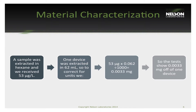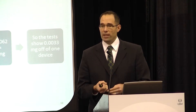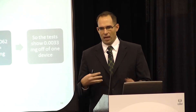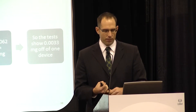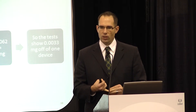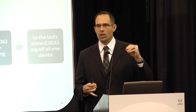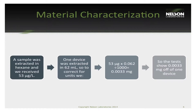Here's a real-life example of how we evaluate compounds coming off a device. The first device was extracted in hexane, a very harsh solvent that can extract many compounds that won't be extracted in alcohol or water. This device was extracted in 62 mL of solvent, and we received 53 micrograms per liter of a certain compound. To find how much came off one device, we multiply: 53 µg/L × 0.062 L = 0.0033 milligrams per device.